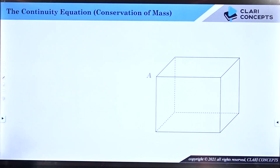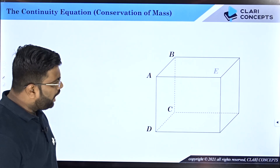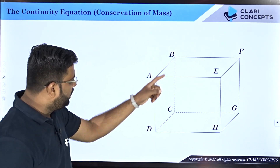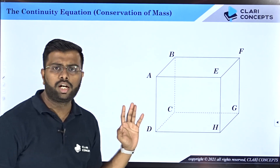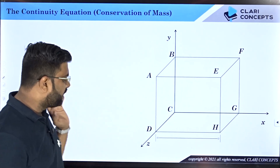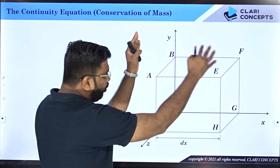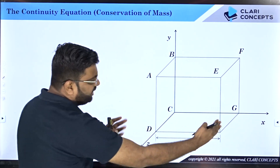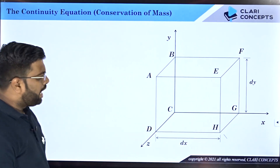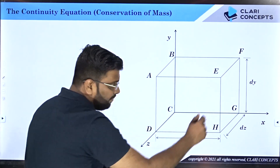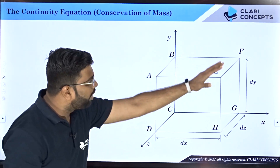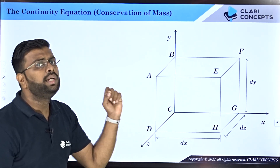In any fluid flow, consider an identified control volume A, B, C, D, E, F, G, H in a Cartesian coordinate system with three axes X, Y, and Z. This control volume has dimension DX in the X direction, DY in the Y direction, and DZ in the Z direction. This is not a physical box — it is just the boundaries or control volume chosen for the study, and fluid is flowing over it.